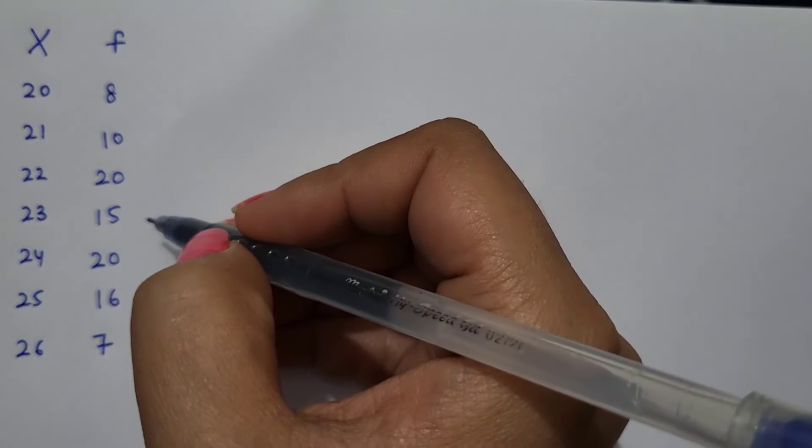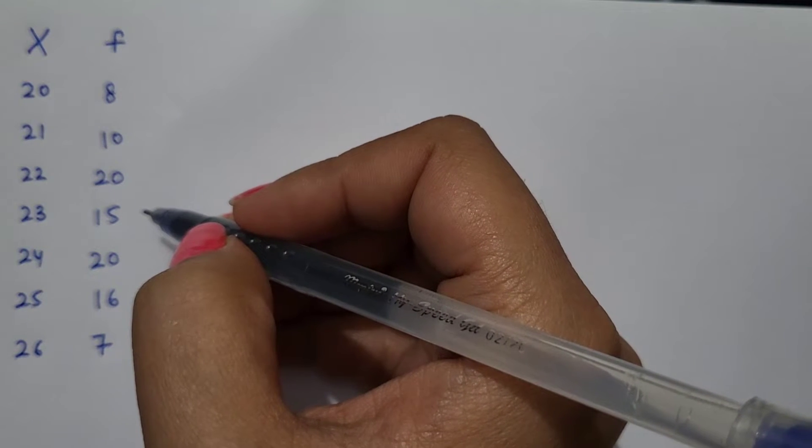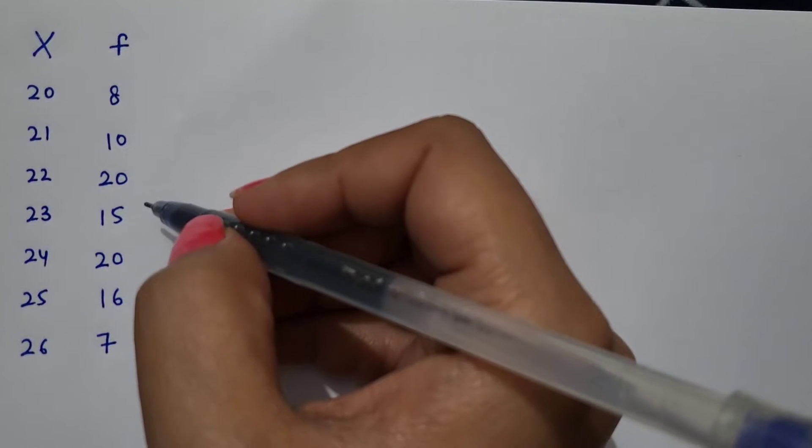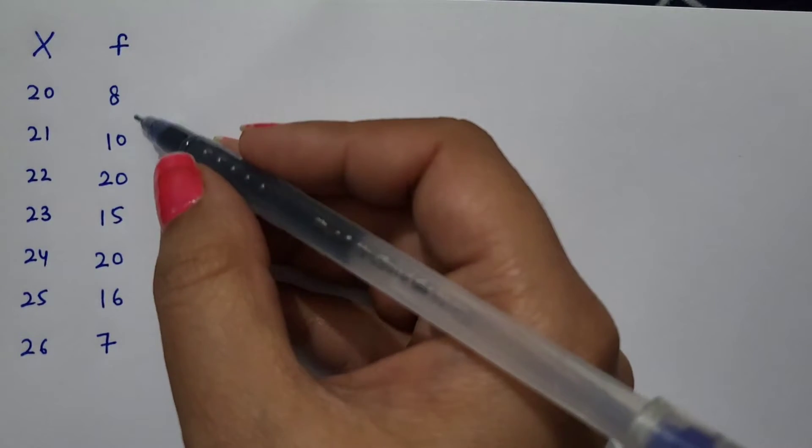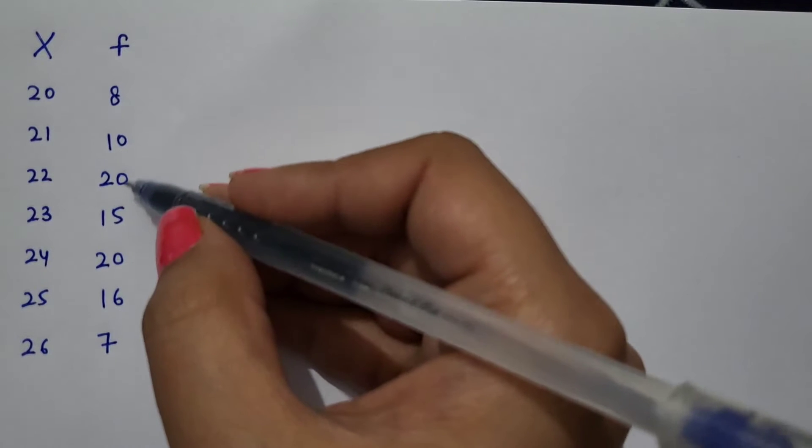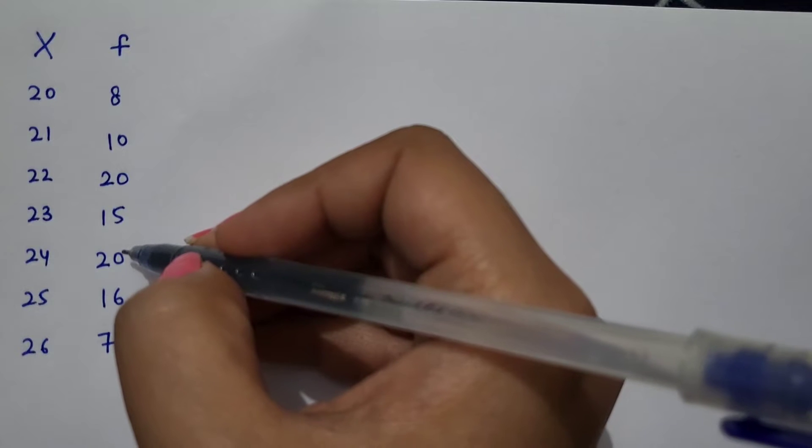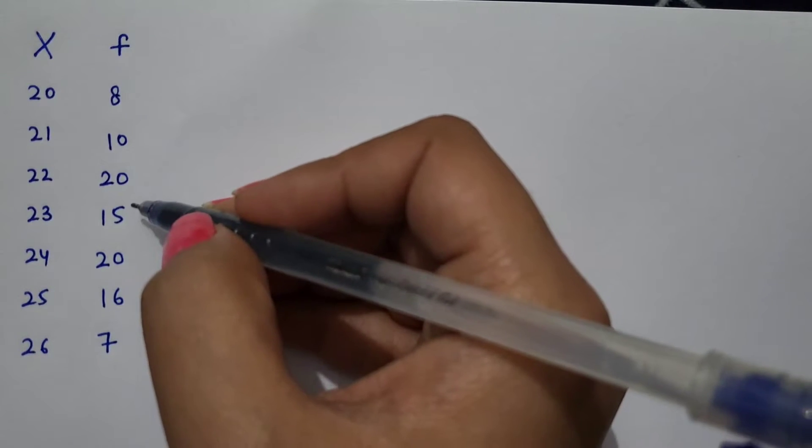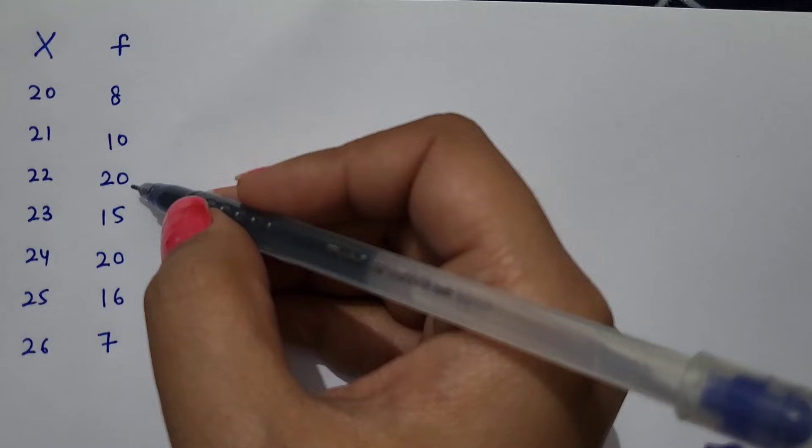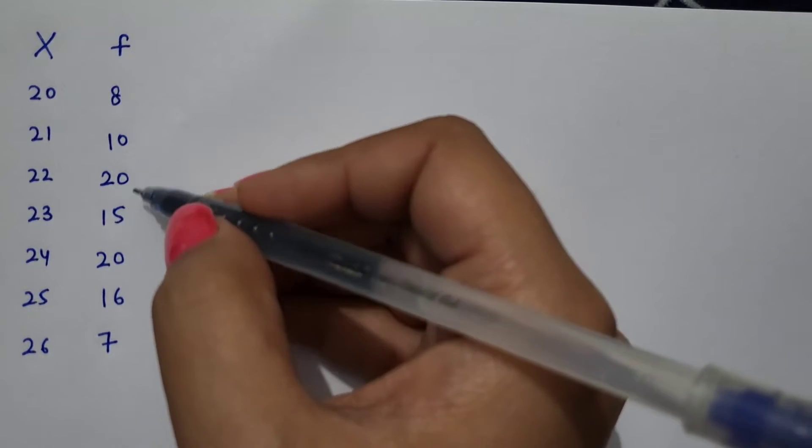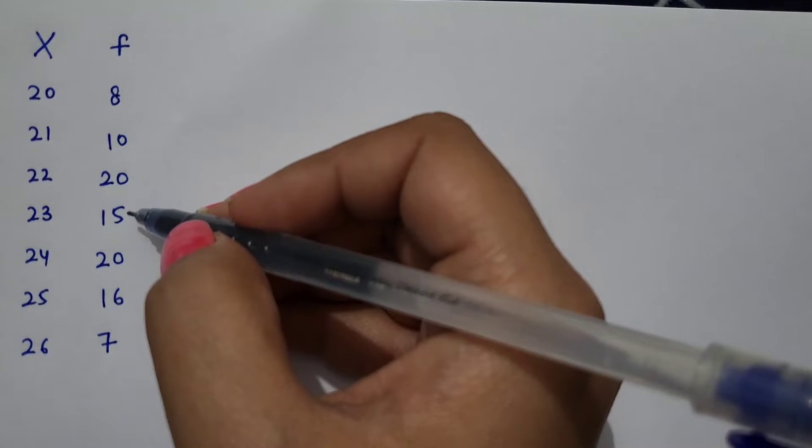Grouping method is applied when you have to calculate the mode with the help of grouping method. Otherwise, when the frequency is either two times or highly concentrated. Suppose that the highest frequency is 25, but the other observation is 24. In such close highest frequency, we have to calculate the grouping method. First step is grouping table. In grouping table, we have to create 6 columns.